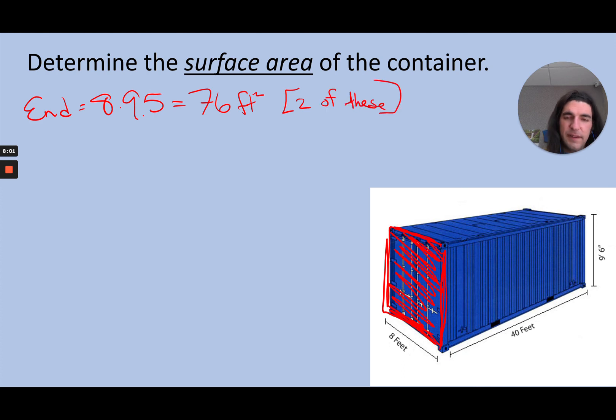Okay, next up, how about I check out the top. So maybe I think of the top of this shipping container. It's 40 feet long and 8 feet wide, so that's 320 square feet. Once again, there's two of these.